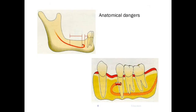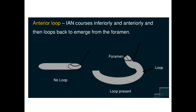There are many anatomical considerations, and the most important is the anterior loop. Whenever you see a mental foramen, never think that the nerve ends there — the nerve takes an anterior loop. It is not always the case that the nerve loops before coming out from the mental foramen; sometimes it comes out straight, sometimes it takes an anterior loop, and this distance varies in different patients.